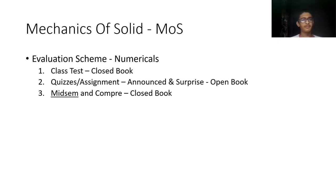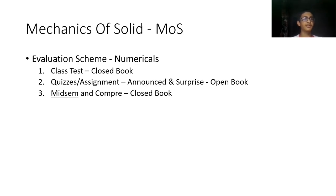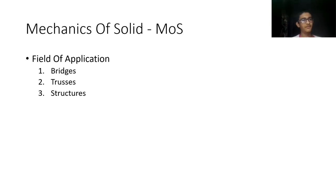For the evaluation scheme, all questions are numerical — no theory is asked. We had three tests (T1, T2, T3) introduced in a recent semester — closed book. There are three announced quizzes and surprise quizzes, generally open book in class. Note that a surprise quiz typically comes in the second class of a new chapter, covering the previous chapter. We should now have mid-sem and compre this semester. Keep practicing numericals — that's the only way to crack this course. Applications include bridges, trusses, and similar structures.